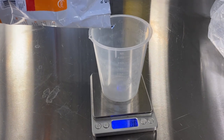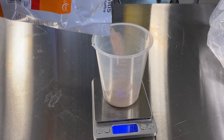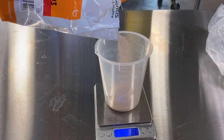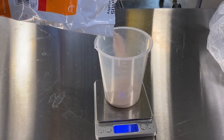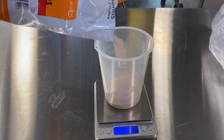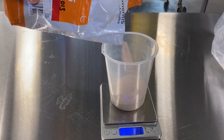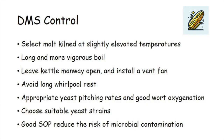Some yeast strains are more effective at metabolizing remaining DMS precursor than others. Avoiding yeast strains with higher levels of DMSO reductase enzyme can help lower DMS levels in beer. Good standard operating procedures and sanitation practices will reduce the risk of wild yeast and wort spoilage bacteria contamination.